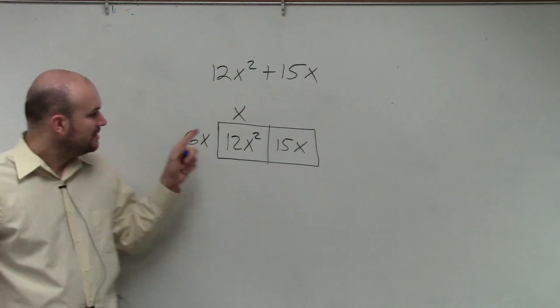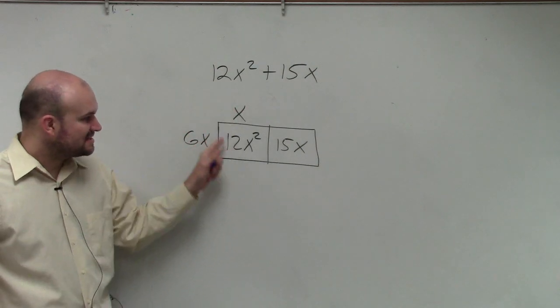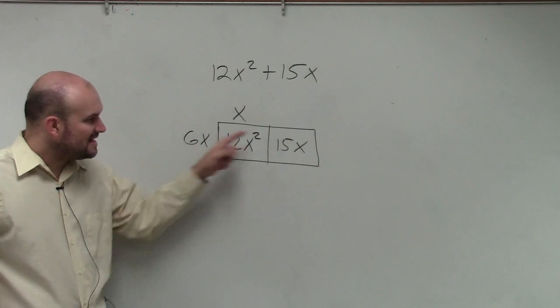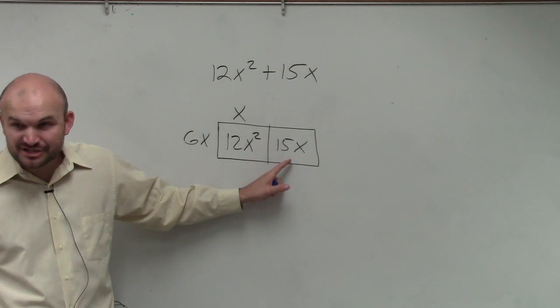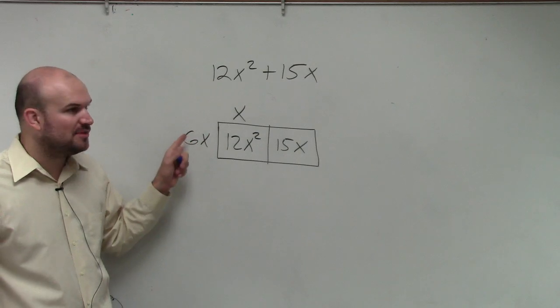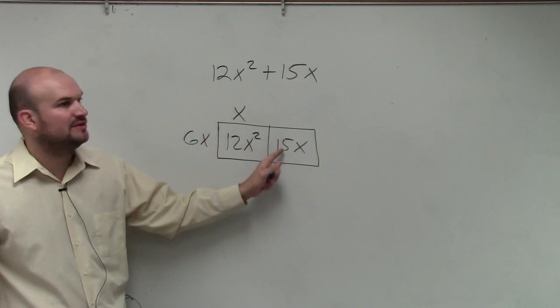But here's the problem. 6x times x gives you 12x squared. But 6x times what gives you 15x? Issue, right? Because now you're going to have to multiply by a fraction. 6 does not evenly divide into 15.